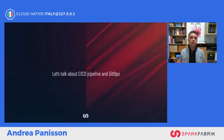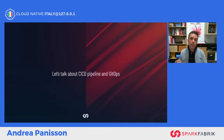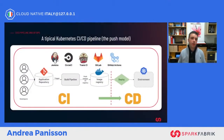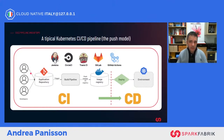We have seen what GitOps is and done a quick overview of the main operators. Now let's see what the workflow of a CI/CD pipeline should look like from a GitOps perspective. First, let's look at a typical CI/CD pipeline for an application deployed on Kubernetes: developers push their code to the application repository, build pipelines are triggered, and at the end Docker images are pushed to an image registry. This concludes the continuous integration phase.